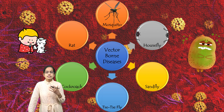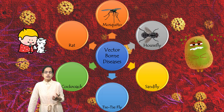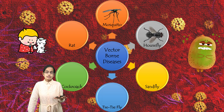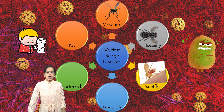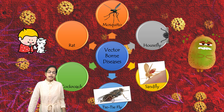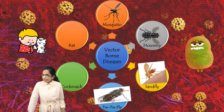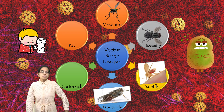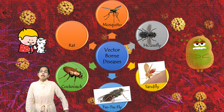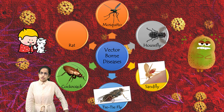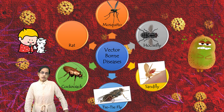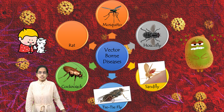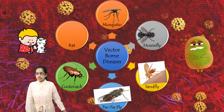The next vector is houseflies, commonly seen where there is no proper hygiene being maintained. Then you have sandflies and tsetse fly — less commonly heard of, but they cause very important diseases. Cockroaches are seen mainly in places where improper sanitation and unhygienic conditions are maintained.